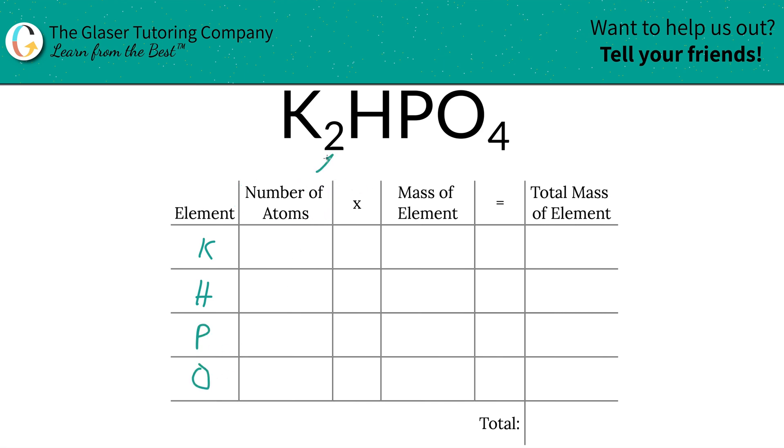Next is to write down the number of atoms of each, and that's where the subscripts come into play. At the bottom of potassium there's a 2, the bottom of hydrogen there's an assumed 1, phosphorus same thing there's a 1, and then oxygen there's going to be 4.